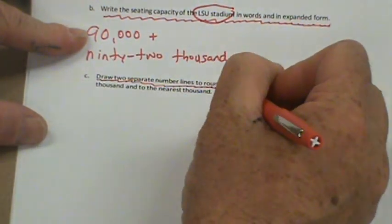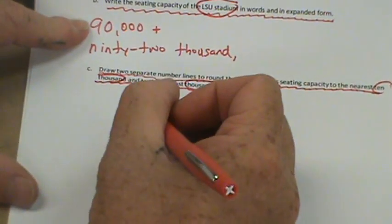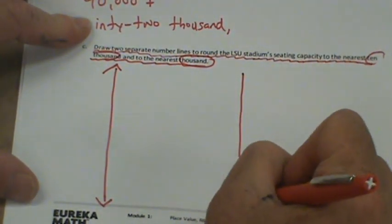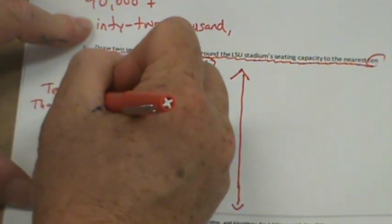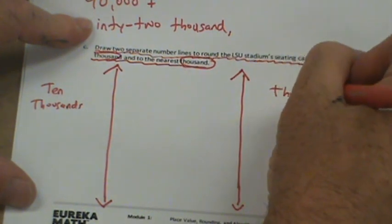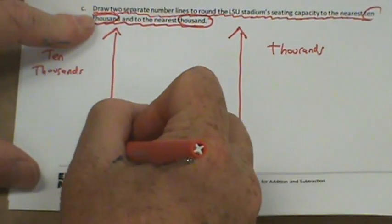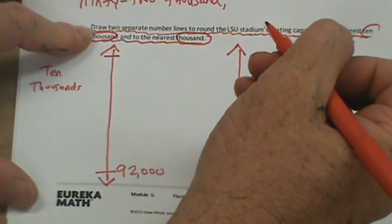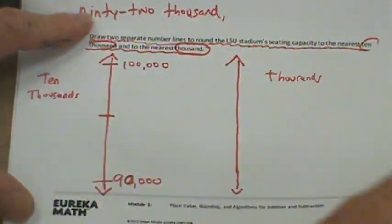Our next one. It says, draw two separate number lines to round the LSU Stadium seating capacity to the nearest ten thousand and the nearest thousand. So it's two different number lines, vertical number lines. Once again, you can always pause this if I'm going too fast. And we're going to put ten thousands here and thousands here. So I'm going to help you set up the ten thousand ones. Their stadium is 92,542. So on my bottom end point, I'm going to put 92,000. At my top end point, I'm sorry, nearest thousands. I'm going to put 90,000 on the bottom and 100,000 on the top. And my midpoint would be 95,000.